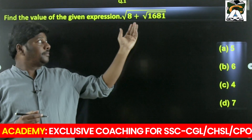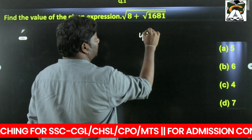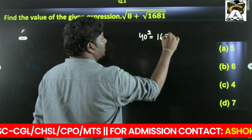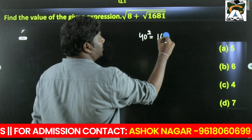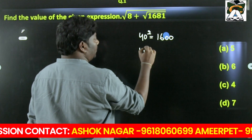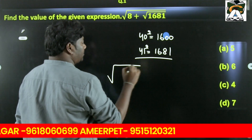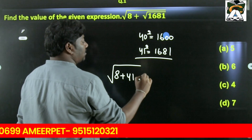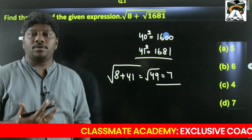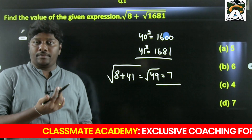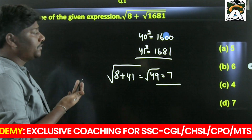For example, looking at this question asked in Mains: 1681 — anyone can say by looking at it that 1600 is the square of 40, therefore 1681 is the square of 41. So you can say the root of 8 plus 41, and root of 49 is 7. This question can be done without using pen and paper.